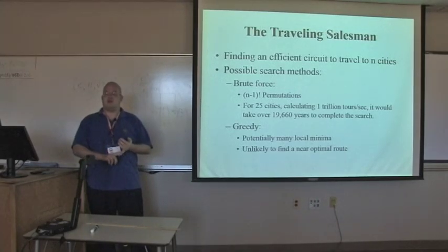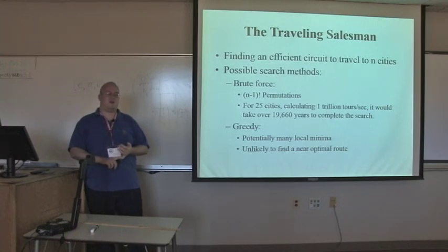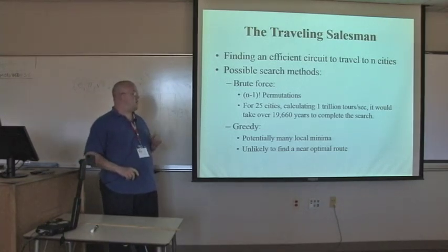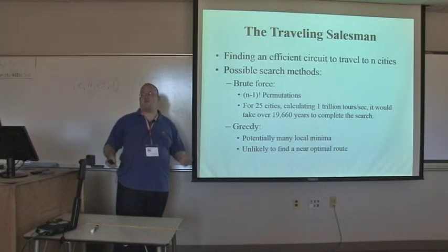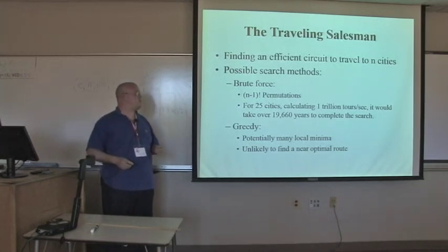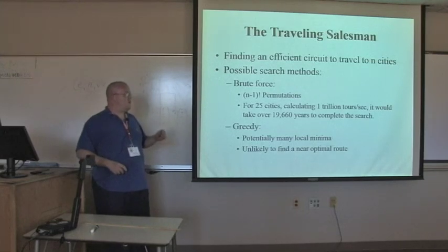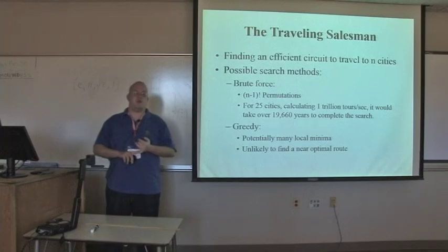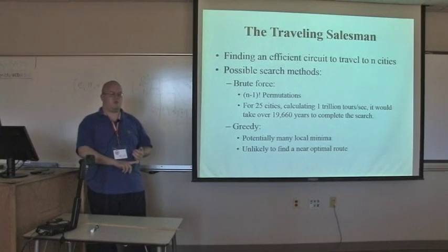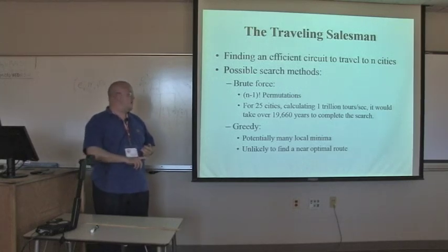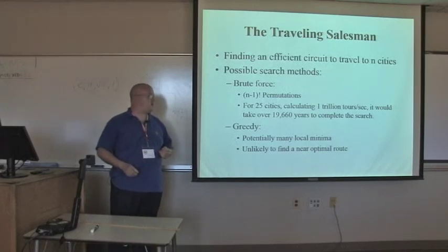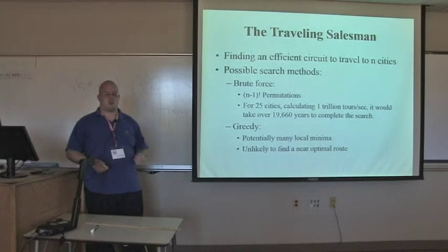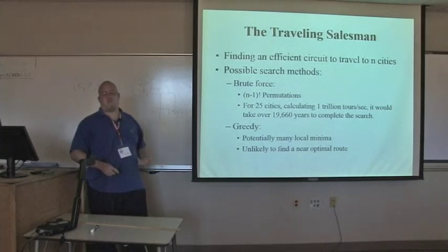With a brute force search, the good thing is you are, if there is an optimum solution, you will find it. The bad news is that you need to calculate n factorial solutions to be sure that you found the best one. Excuse me, n minus one factorial. Now, as an example, if we have 25 cities and we could calculate one trillion tours per second, which I can't do, it would take us over 19,000 years to actually fully test the solution space and come up with an answer. And we just don't have that kind of time.